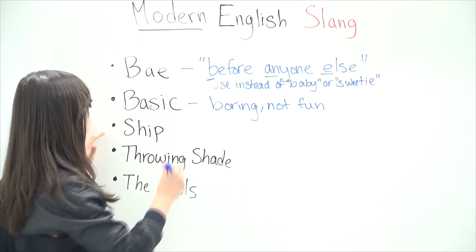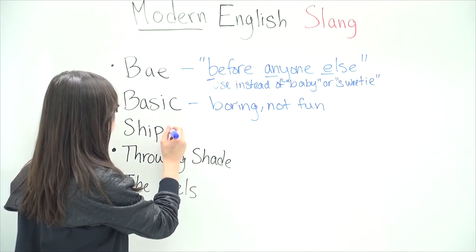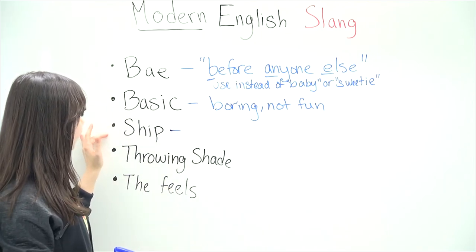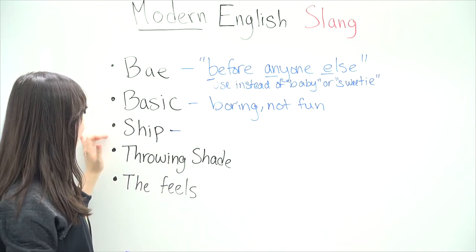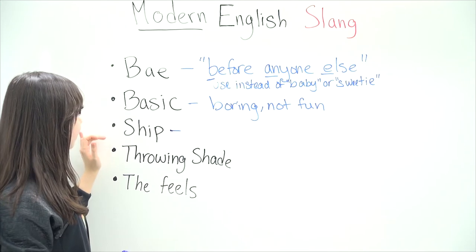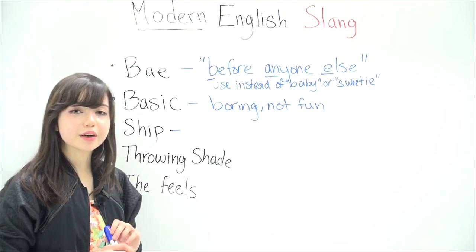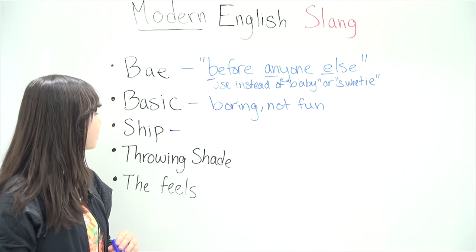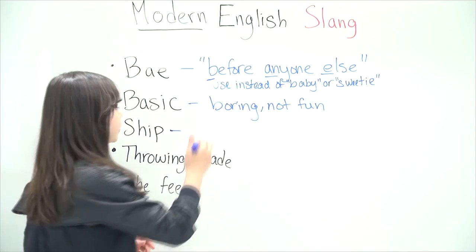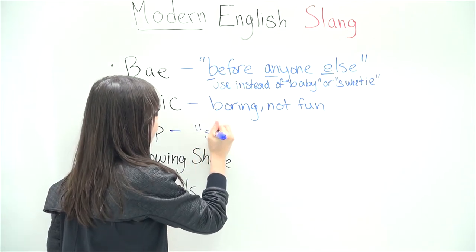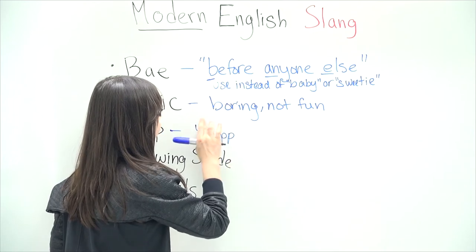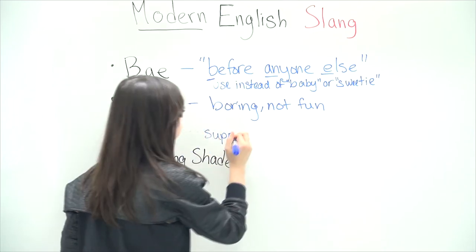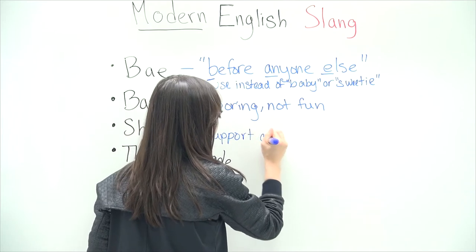Okay, number three is 'ship.' This one has a very specific meaning. To ship actually means to support a relationship. In our internet community, a big trend now is when you're a fan of someone or multiple shows, books, or movies, you kind of want certain characters to get in a relationship — be a boyfriend and girlfriend. This term actually came from that trend, but now people use it in normal day-to-day speech.